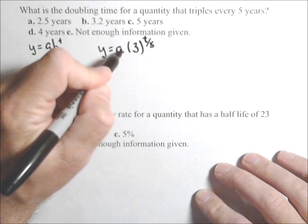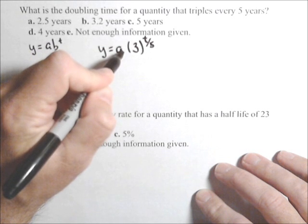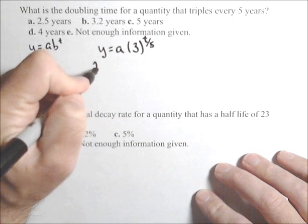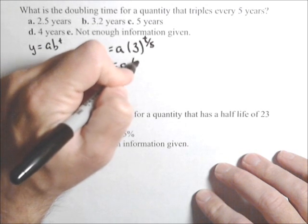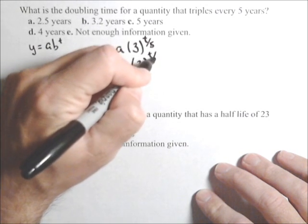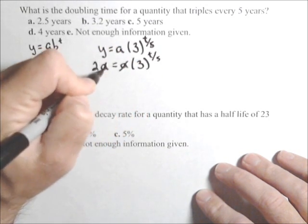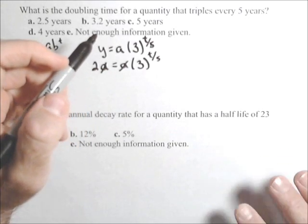I want to know when the initial amount is going to double. So, if I use a as my initial amount, I want to know when it's going to be two a, because that's double a. So, dividing a out on both sides, I now have the equation I want to solve.